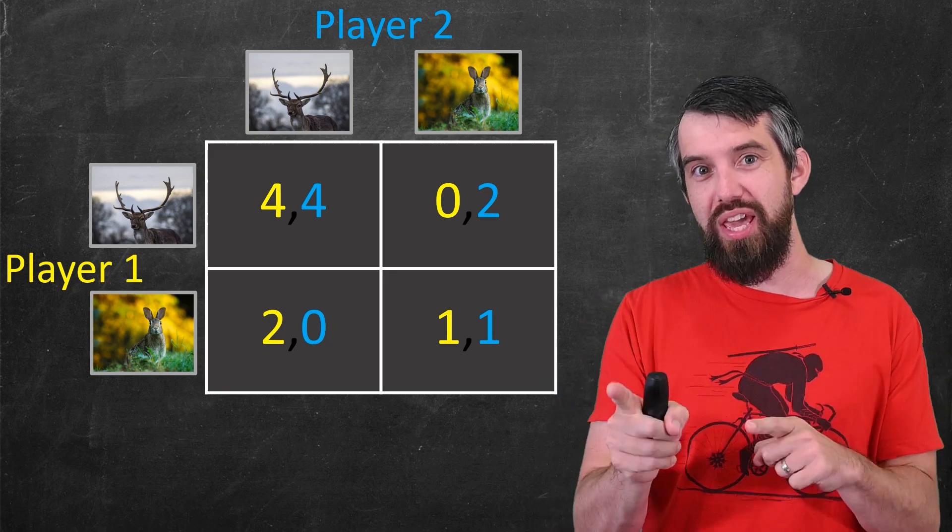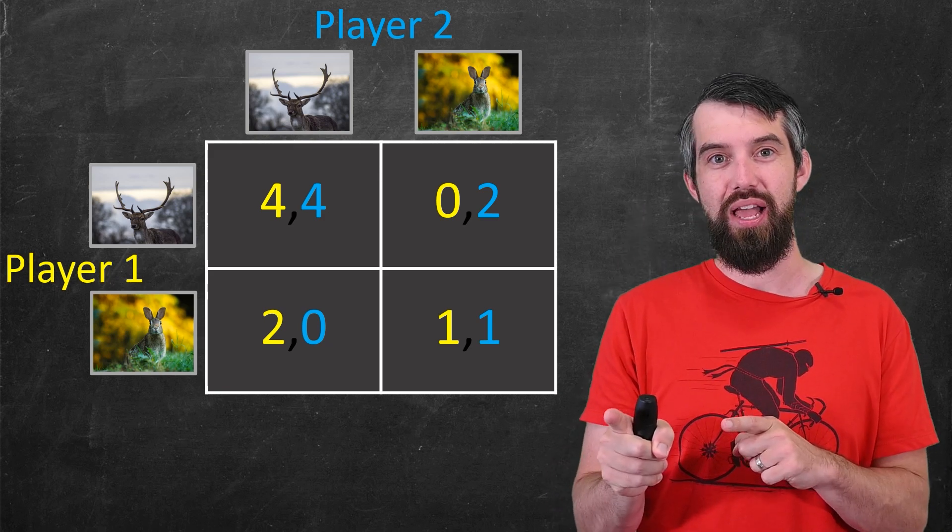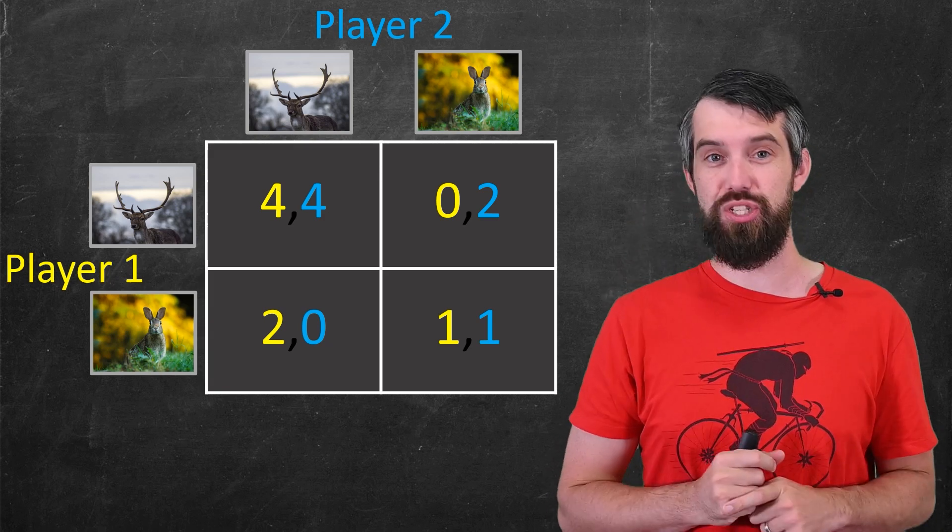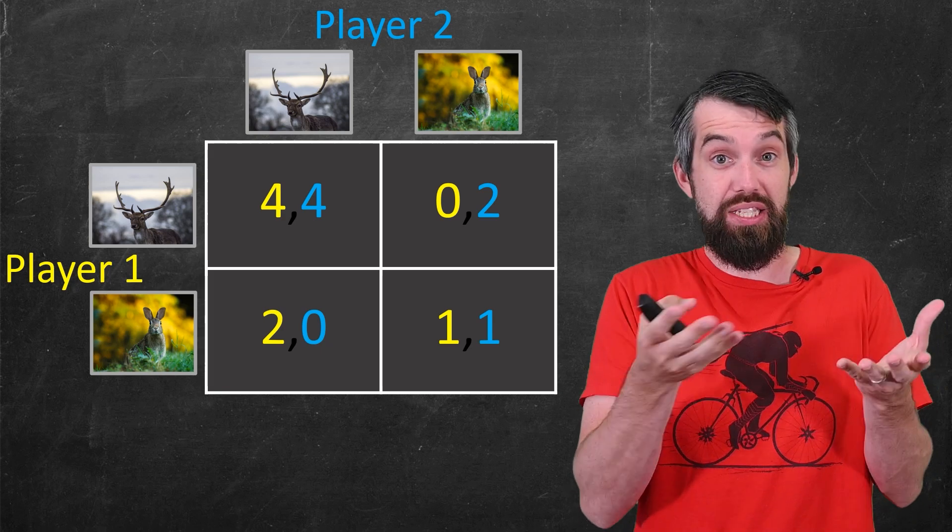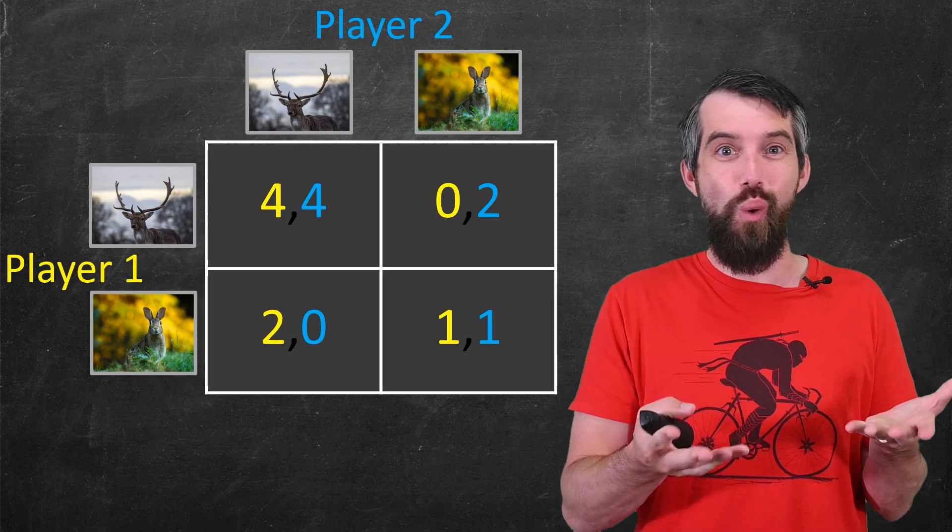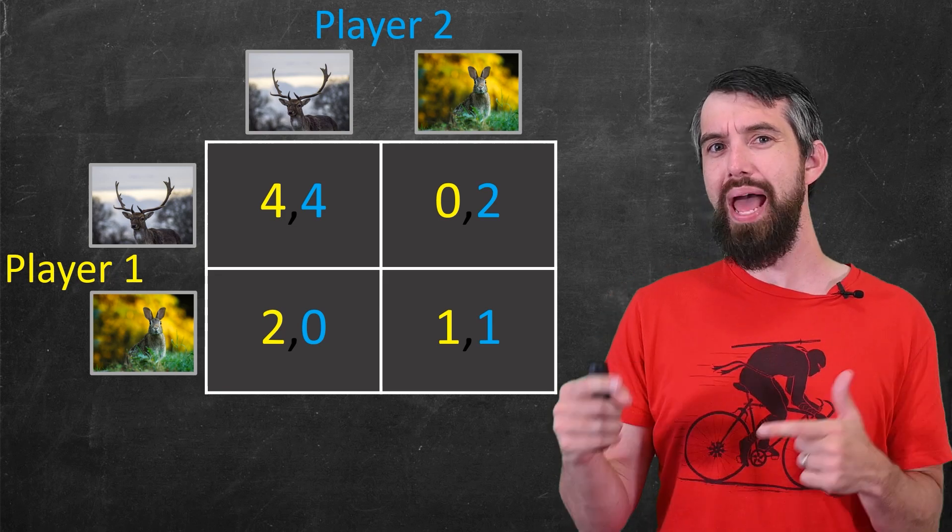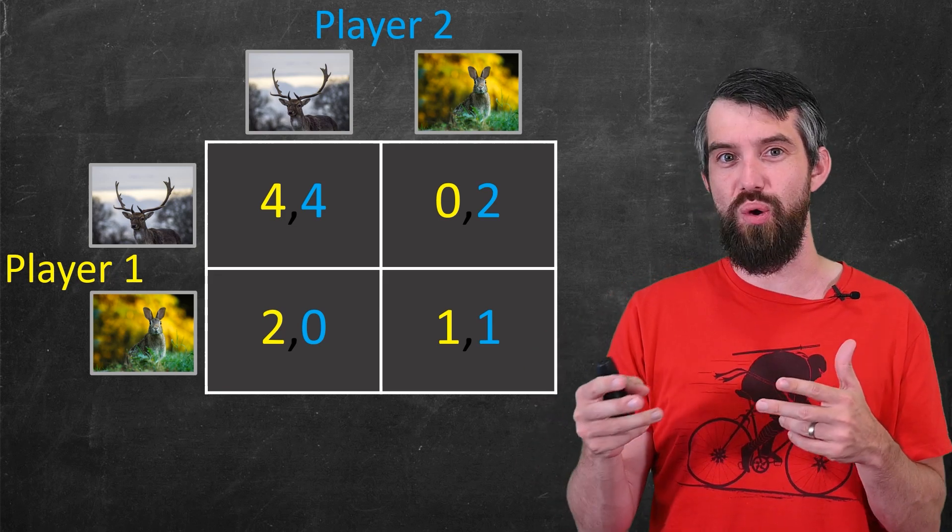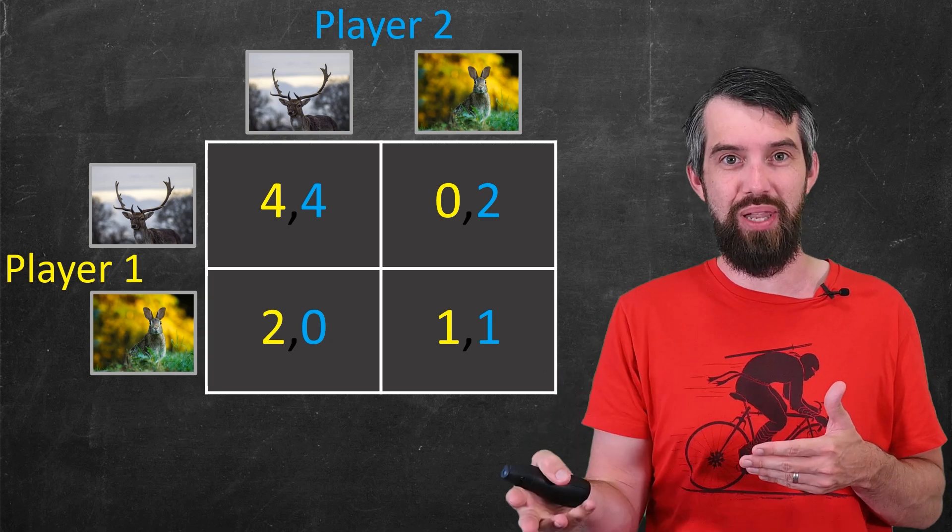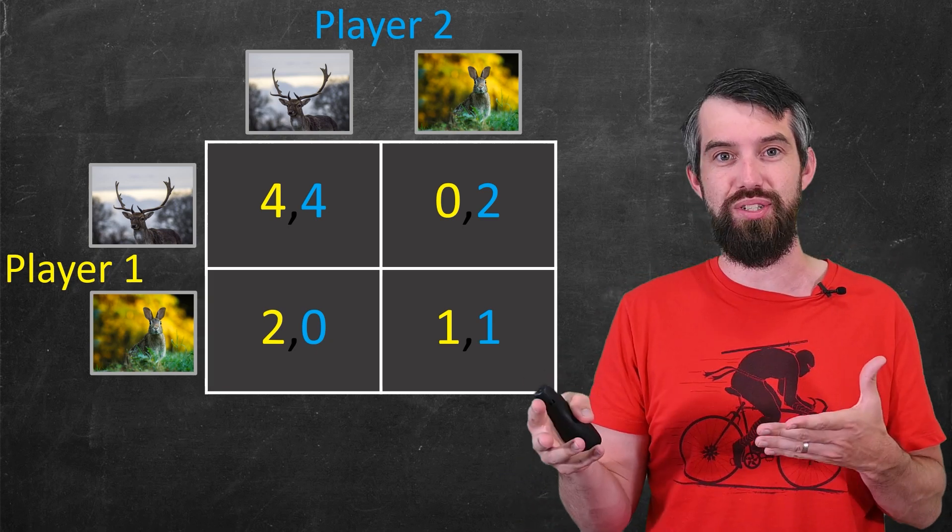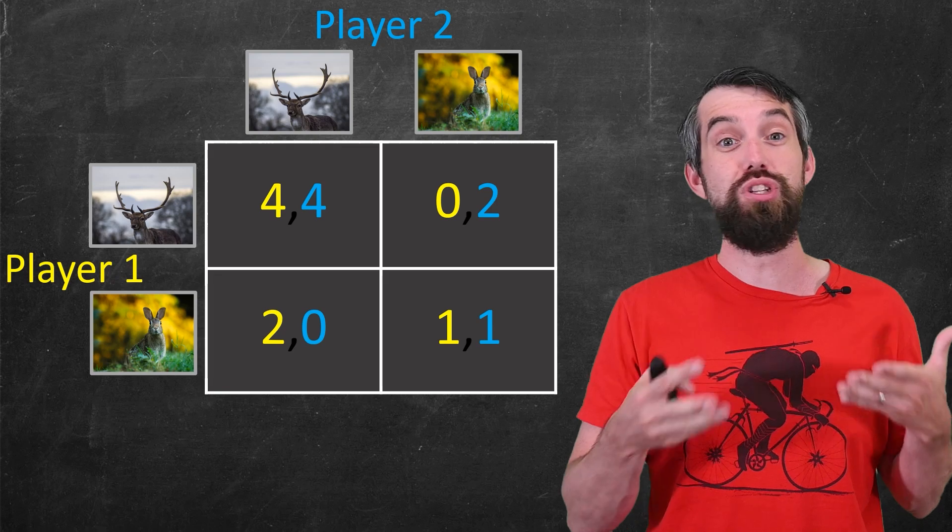If you could communicate with the other player, and if you trusted the other player, then there's a clear best answer. Both players should just play stag. That way they get 4-4, which is bigger than any of the numbers anywhere else on this table. But what would happen if you couldn't communicate, or if you couldn't trust the other player, if you didn't know that they were going to collaborate in this way? How should this game be played?